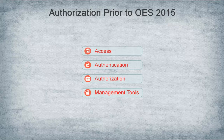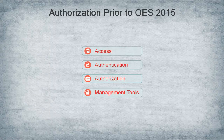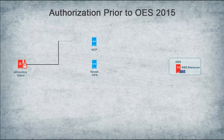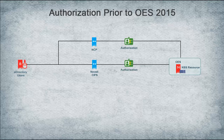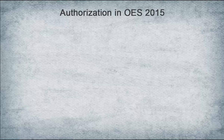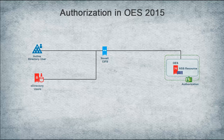Next, let's review the differences in authorization before OES 2015 and how it works now. For eDirectory users prior to OES 2015, the authorization to access NSS resources using NCP and CIFS happens at the respective protocol level. On the other hand, users who are using AFP, FTP, Samba, SSH, and SCP are authorized at NSS. Beginning with OES 2015, authorization for both eDirectory and Active Directory users who are using CIFS occurs at NSS. The rest of the authorization methods remain unchanged.